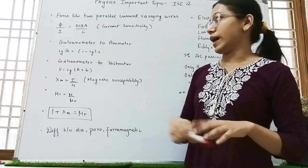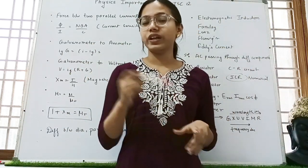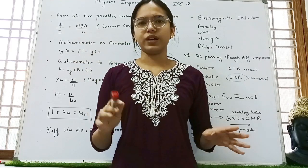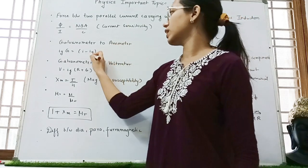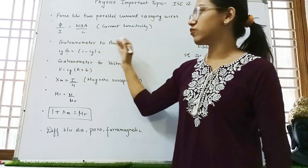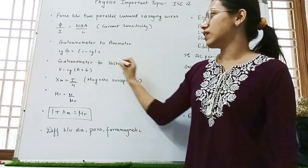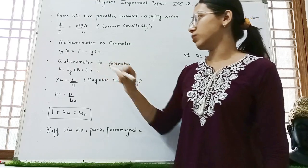So galvanometer to ammeter. How can we convert it? Numerical based strong. This is asked most of the times. IgG is equal to I minus. You have to tell us. This current is. This is what is. You have to put a formula in it. Then galvanometer to voltmeter. You have to use this formula. You can note it.